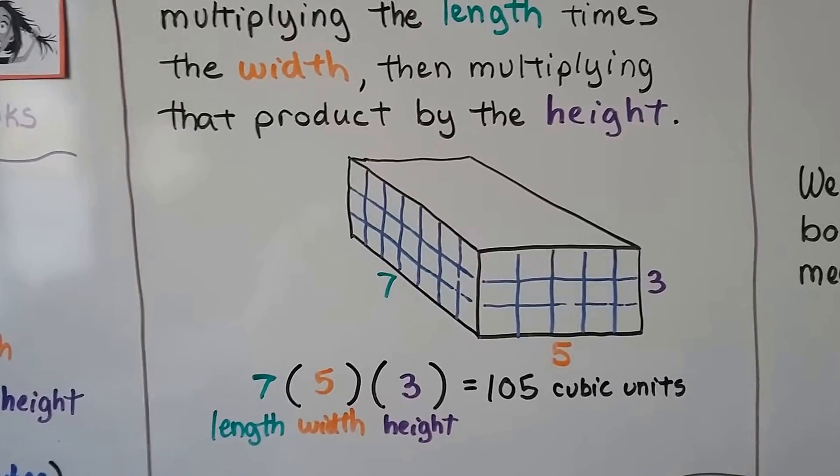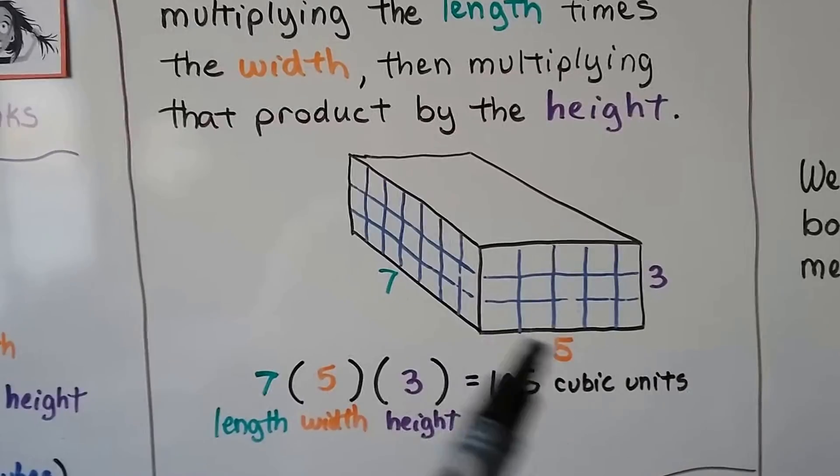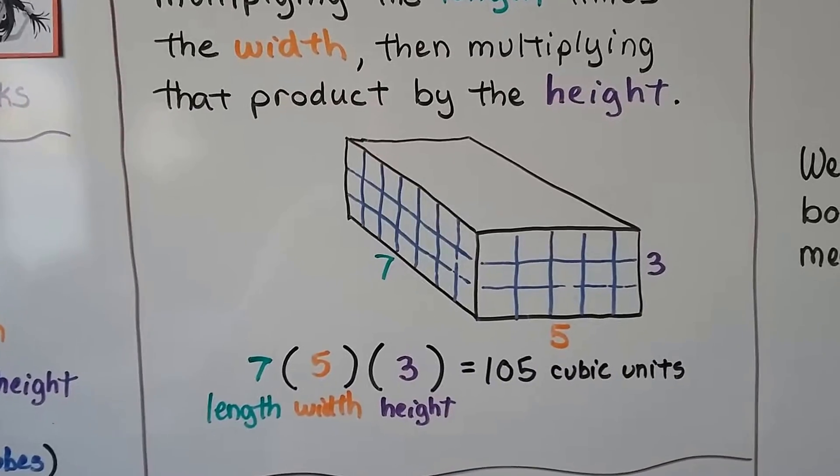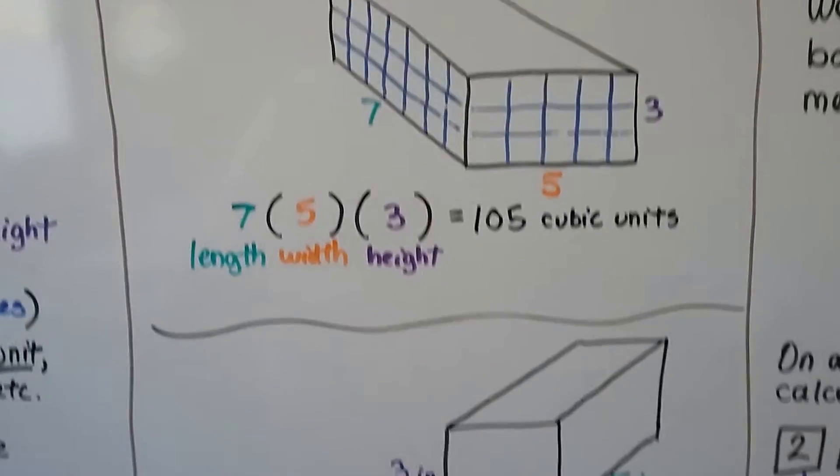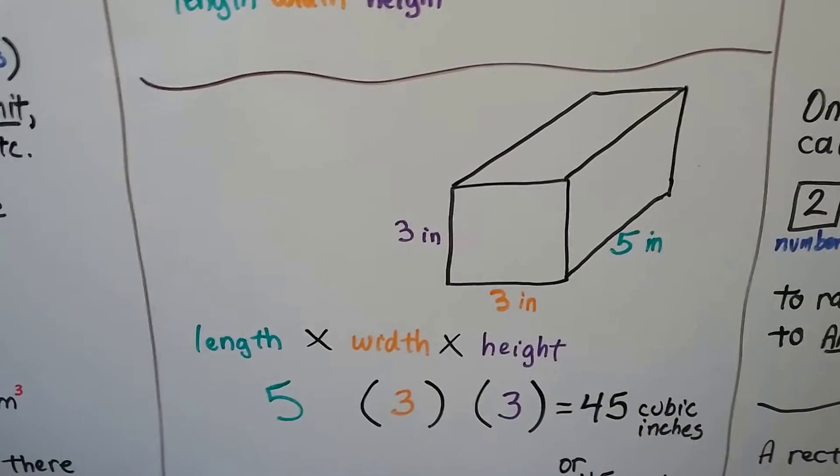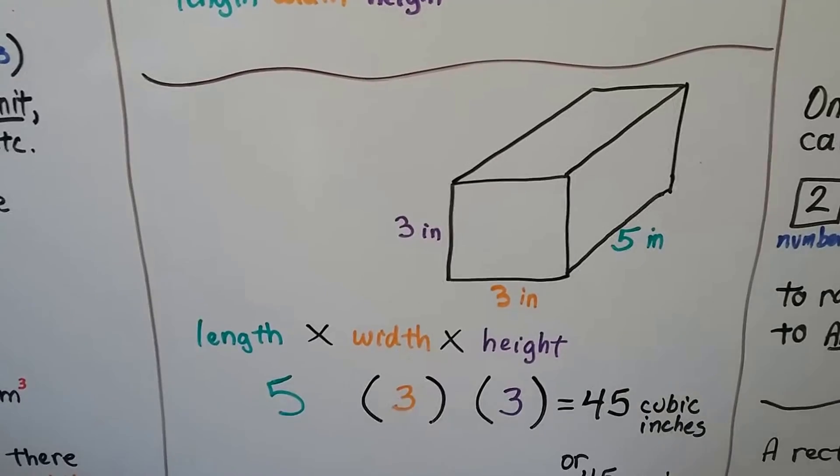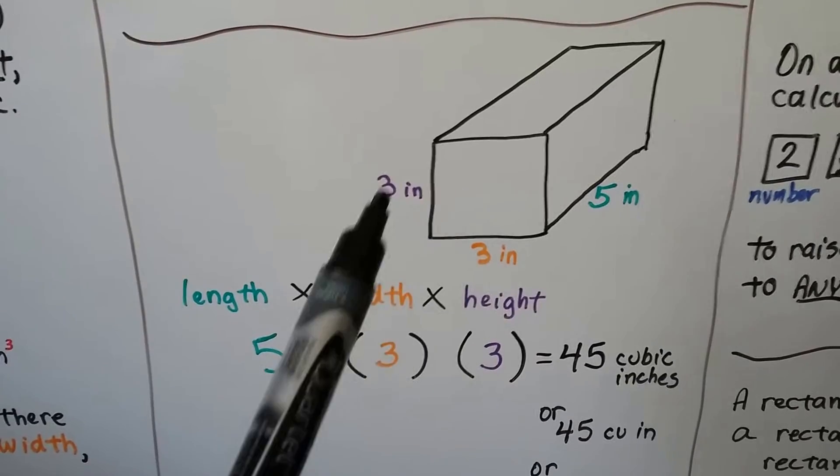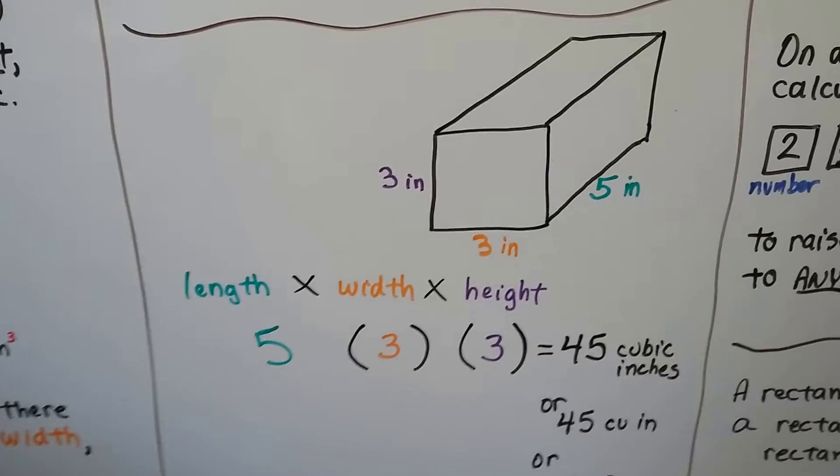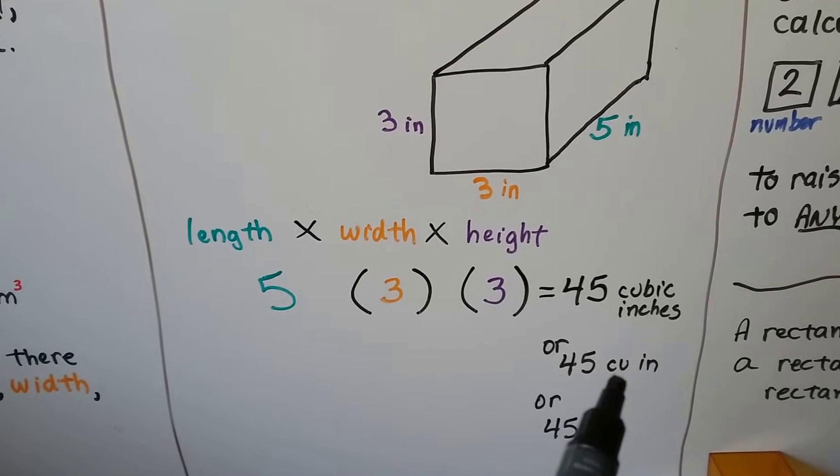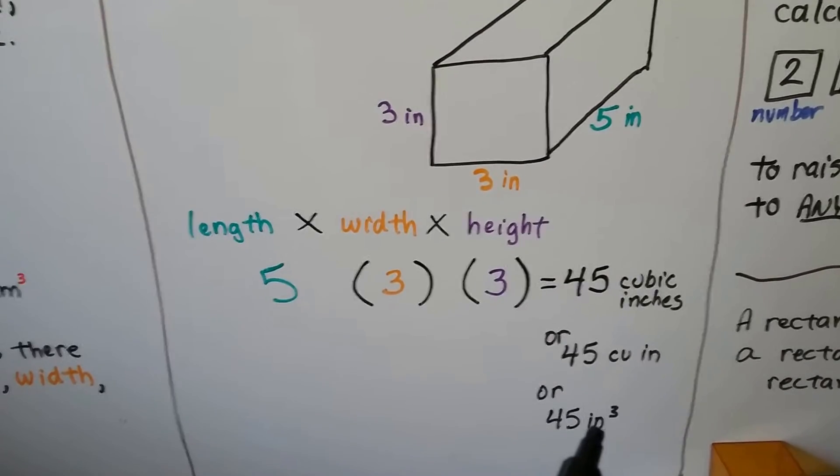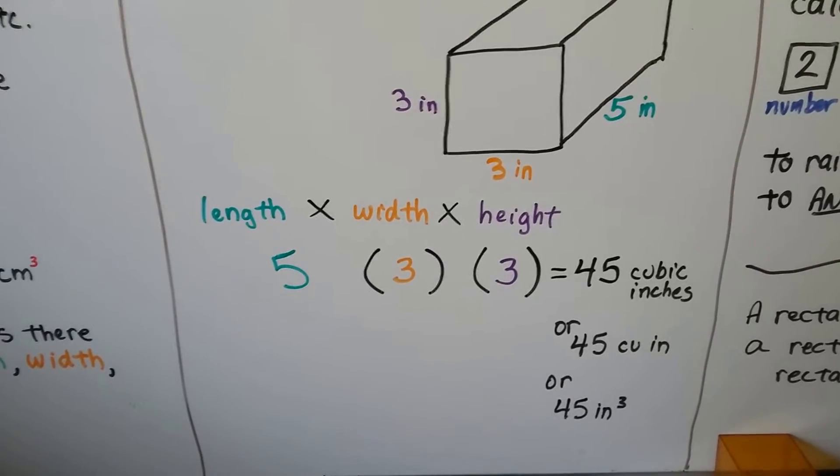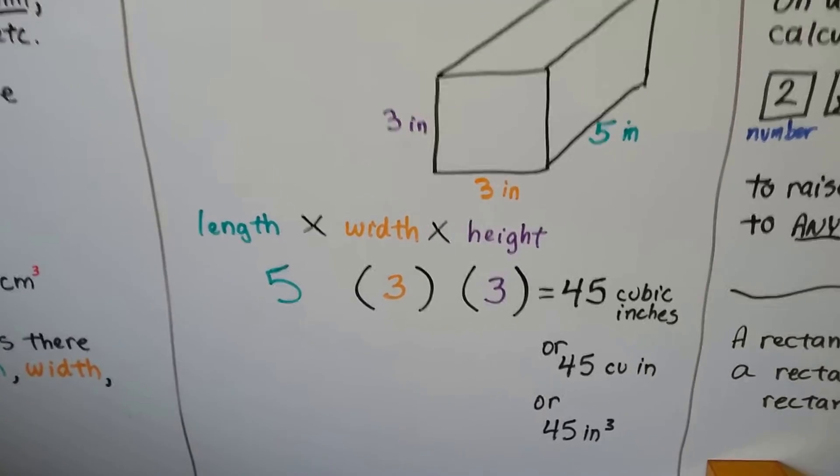So whatever the measurement is, it just says units because it's not telling us if it's inches or centimeters or feet. It's just giving us a number. Now it is telling us it's inches, so our answer is going to be in cubic inches. We do the length times the width times the height. So we do 5 times 3 times 3 and we get 45 cubic inches. We can write it as cubic inches or cu in or in with a little three exponent. It's 45 cubic inches or 45 inches cubed.